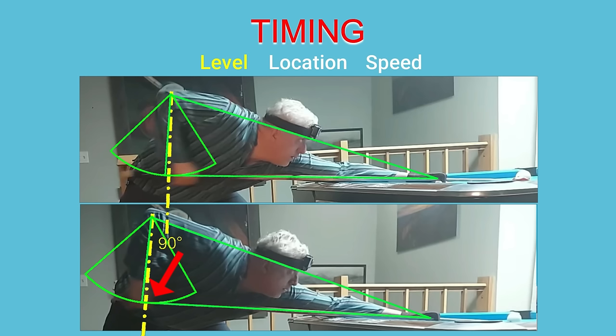Keeping your cue stick as level as possible at address in conjunction with proper grip hand location not only reduces miscues, it means you can be confident that your tip location at address will be the precise tip location at cue ball impact.